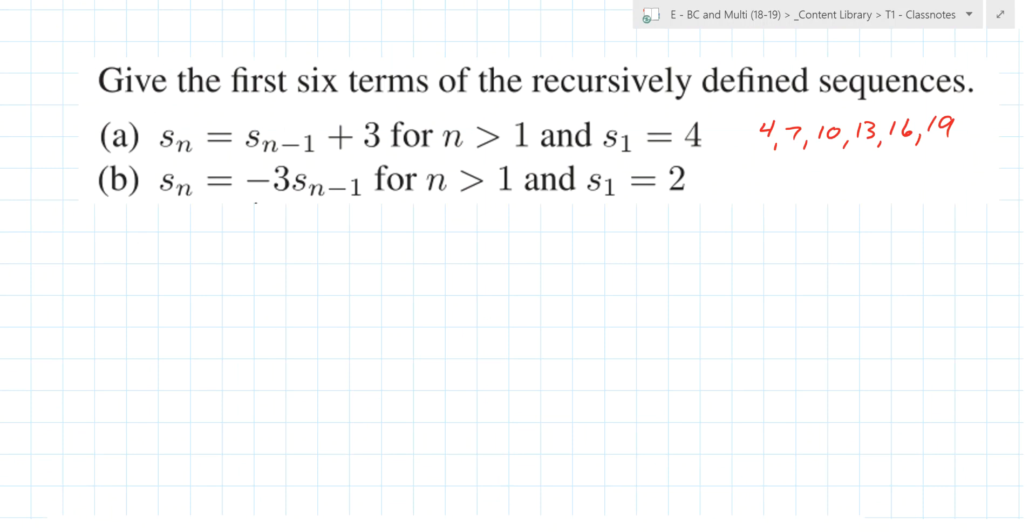Who has the next one for me? Yeah, Ken? 2, negative 6, 18, negative 54, 162, negative 486. Nice.